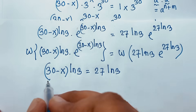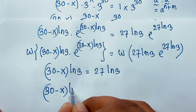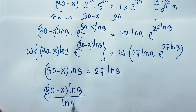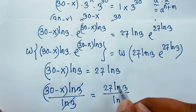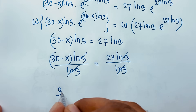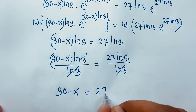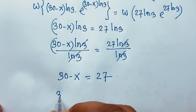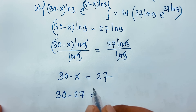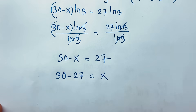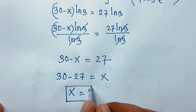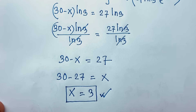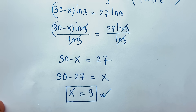Dividing both sides by ln 3, the ln 3 terms cancel, giving us 30 minus x equals 27. Moving 27 to the left side and x to the right: x equals 30 minus 27, which equals 3. This confirms x equals 3. This is our final answer for this nice math olympiad problem. If you enjoyed this video, please subscribe for other interesting videos. Goodbye, take care!